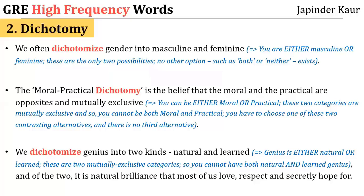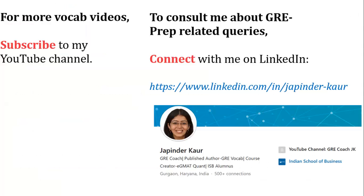We often dichotomize gender into masculine and feminine. The moral-practical dichotomy is the belief that the moral and the practical are opposites and mutually exclusive. We also dichotomize genius into two kinds — natural and learned — and of the two, it is natural brilliance that most of us love, respect, and secretly hope for.